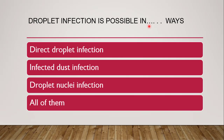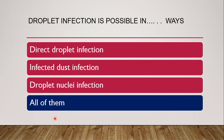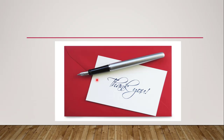Next question: droplet infection is possible in how many ways — direct droplet infection, infected dust infection, droplet nuclei infection, or all of them? The correct answer is all of them. Direct droplet infection is possible, infected dust infection is possible, and droplet nuclei infection — suspended microorganism infection — is also possible. With this, we finish a few of the MCQs from Health Education and Community Pharmacy, Epidemiology chapter. Thank you.